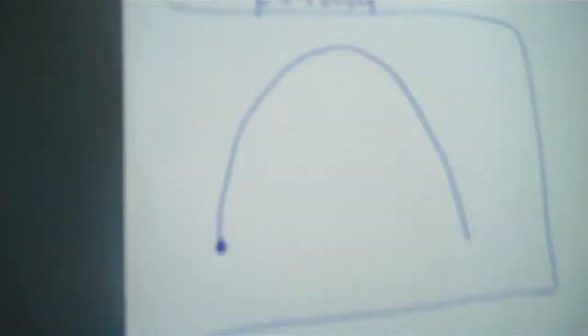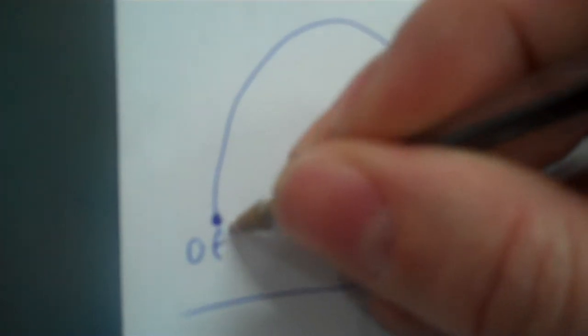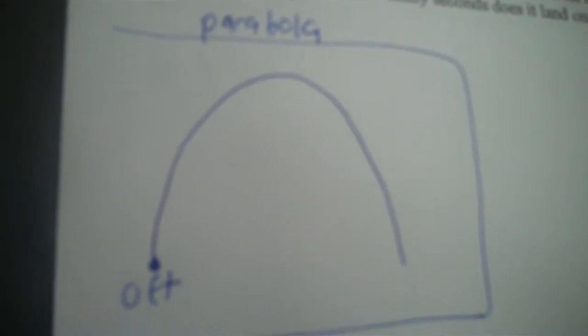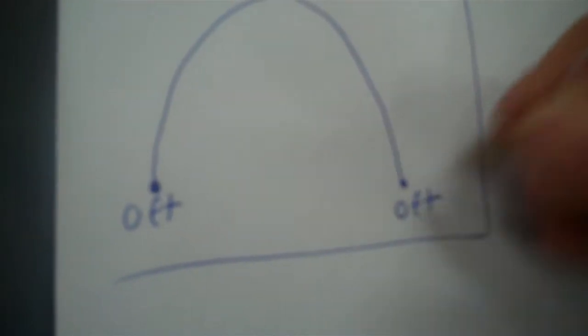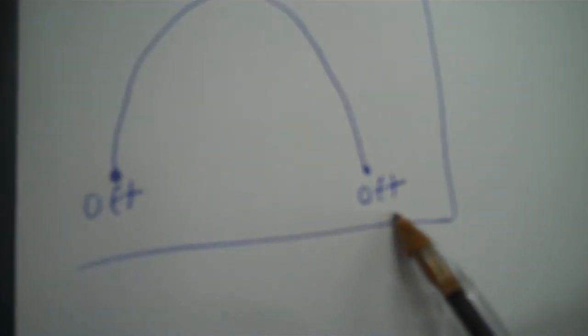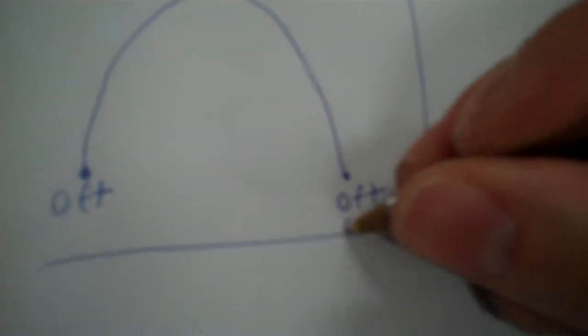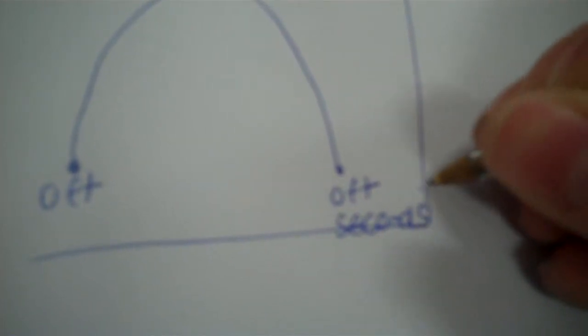To write an equation of a parabola — when you draw a parabola, you always want to mark where he started. He started at zero feet. He lands on the ground, that's also zero feet. And we have to find the seconds — how many seconds he lands on the ground. So I'm going to put seconds, question mark.